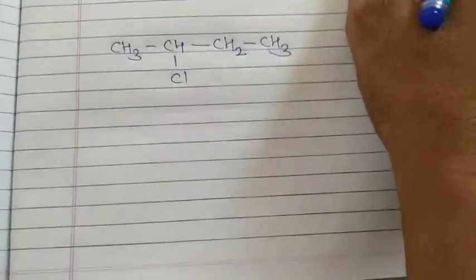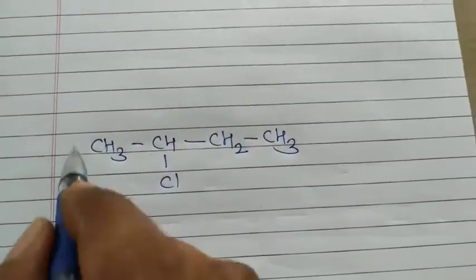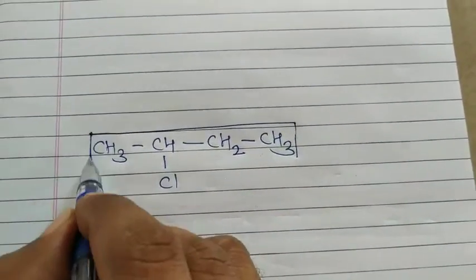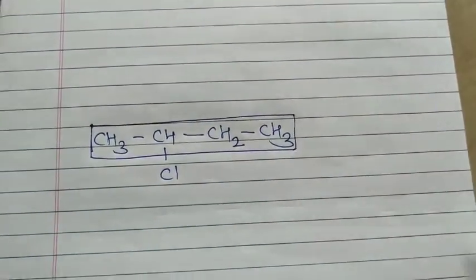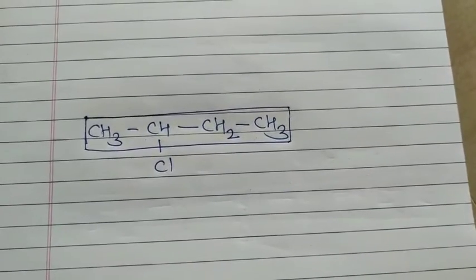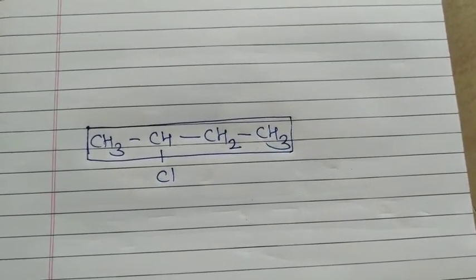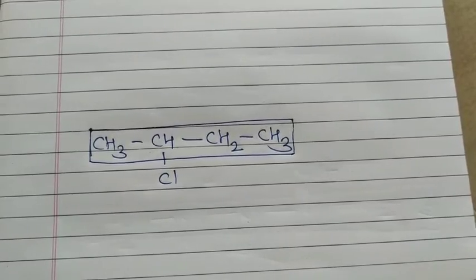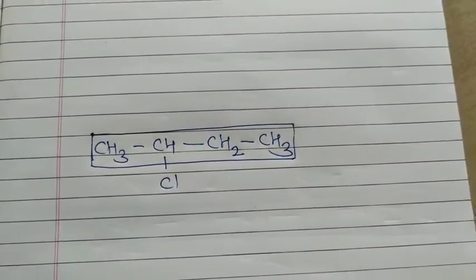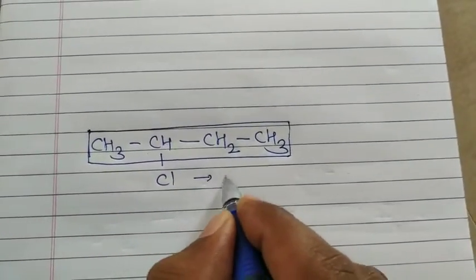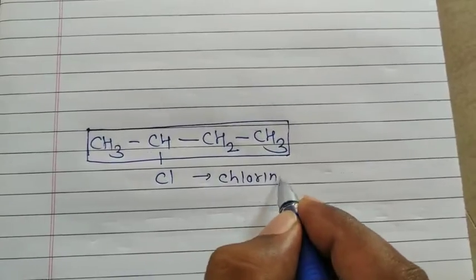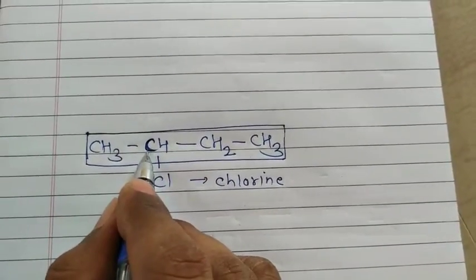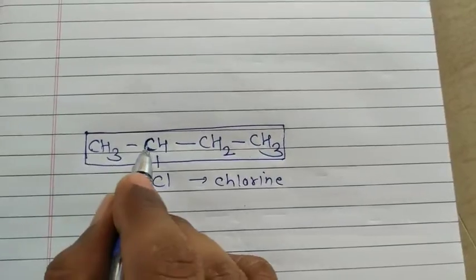Let's consider another example. Select the longest continuous chain of carbon atoms. After selecting the longest chain, give numbers to the selected carbon atoms from that end where the halogen-bonded carbon has the lowest number. The halogen here is chlorine, attached to this carbon atom, which has the lowest number — giving us first, second numbering from that end.